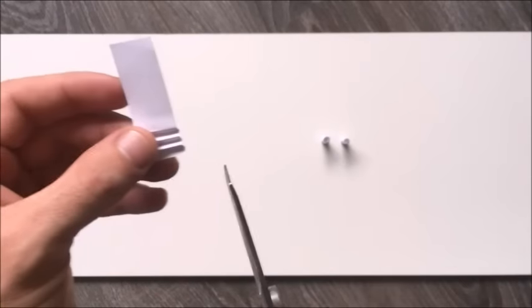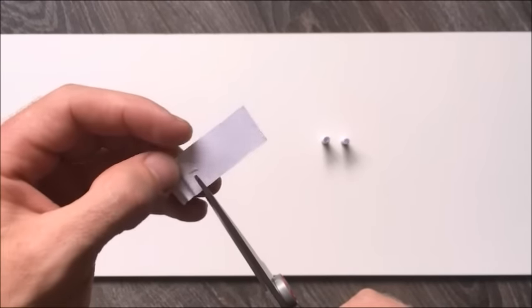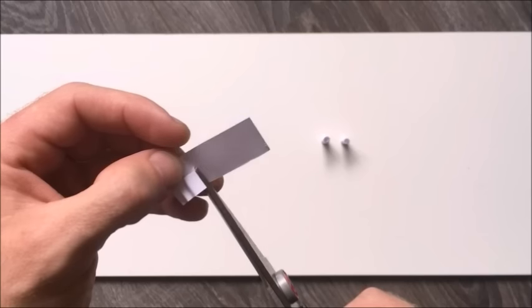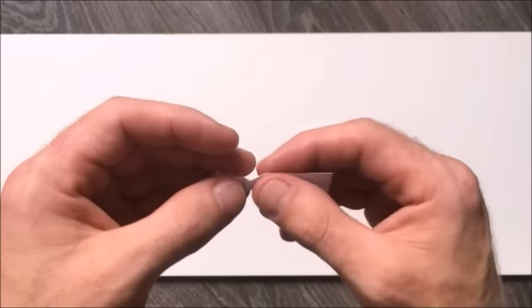Then you want to take a pair of scissors. And where you folded it, you want to cut just like that. So along the crinkled parts and about a centimeter above. So it should look something like that.